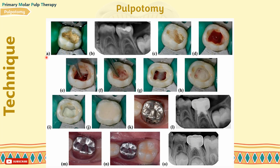Here are the steps again: starting with caries removal, arresting the bleeding until we see the orifices with a clean pulp chamber, placing a cotton pellet, dressing, and restoring with stainless steel crown.